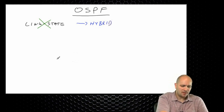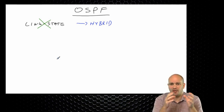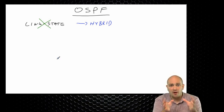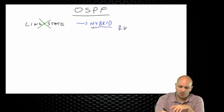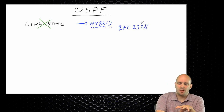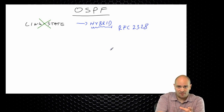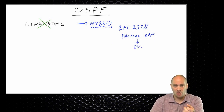Why hybrid? Because inside a single area, OSPF is indeed link state. But when we go into multi-area operations, OSPF actually behaves in a very distance vector way — hence the hybrid designation. If you read RFC 2328 for OSPF, you won't see the word hybrid or distance vector behavior mentioned, but you will read about something called partial SPF. When you understand what that is, you'll realize they are actually describing a distance vector behavior of the routing protocol.